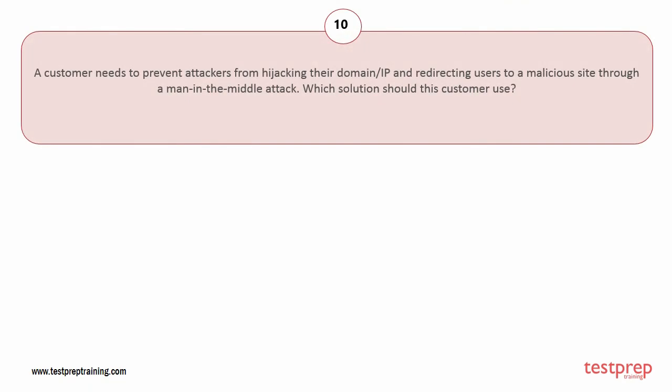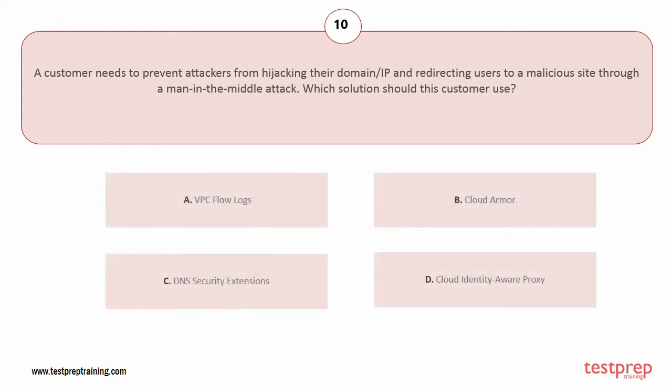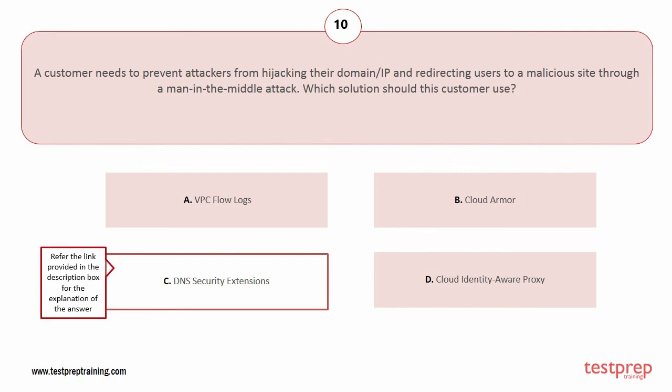Question number ten: a customer needs to prevent attackers from hijacking their domain or IP and redirecting users to a malicious site through a man-in-the-middle attack. Which solution should this customer use? Options: A) VPC flow logs, B) Cloud Armor, C) DNS security extensions, D) Cloud Identity Aware Proxy. The correct answer is option C.